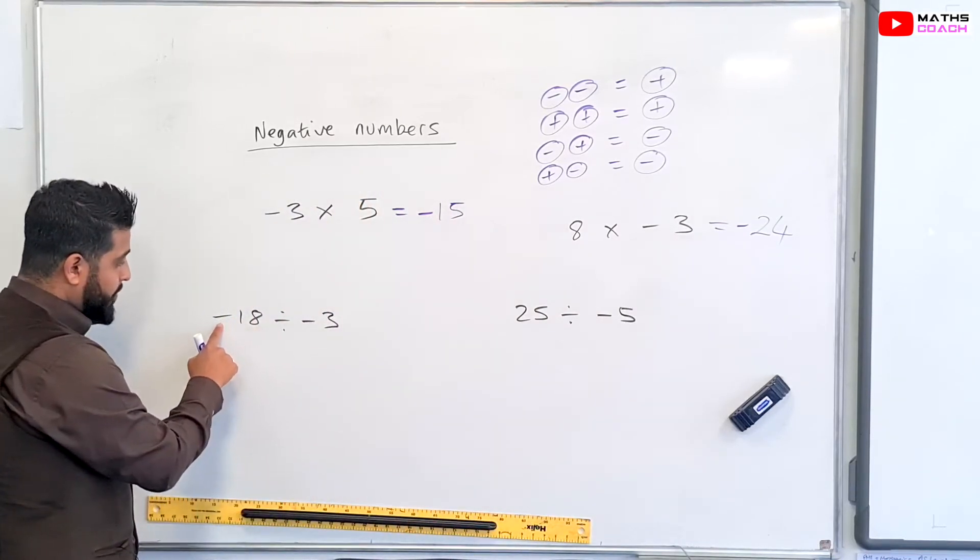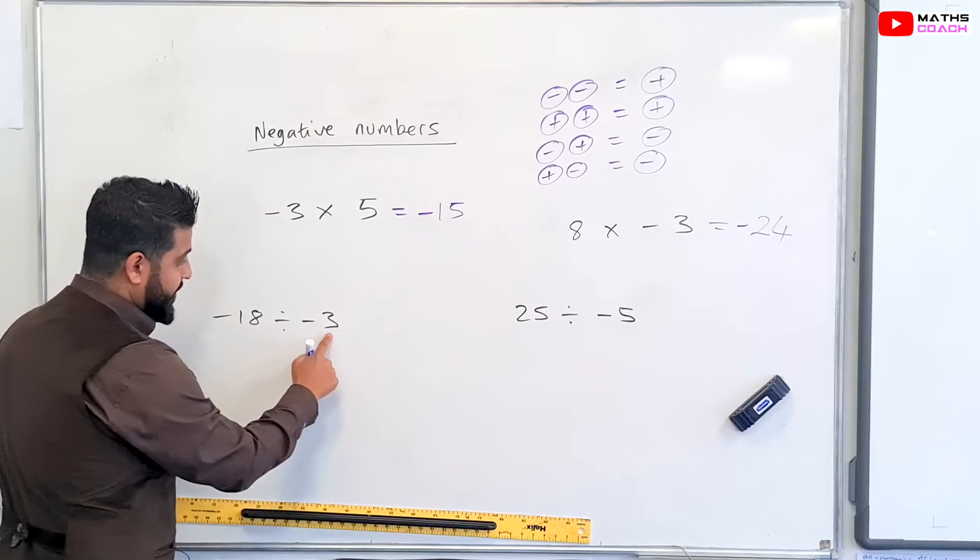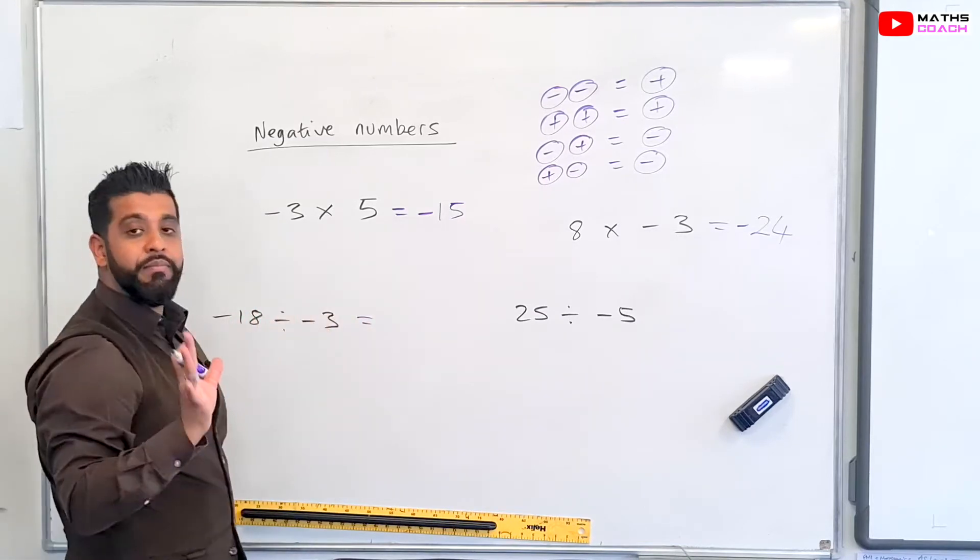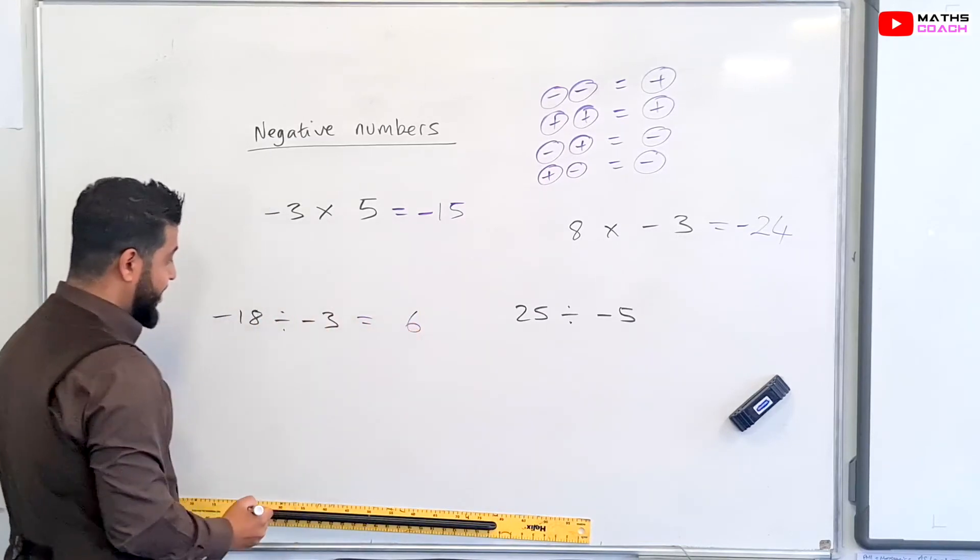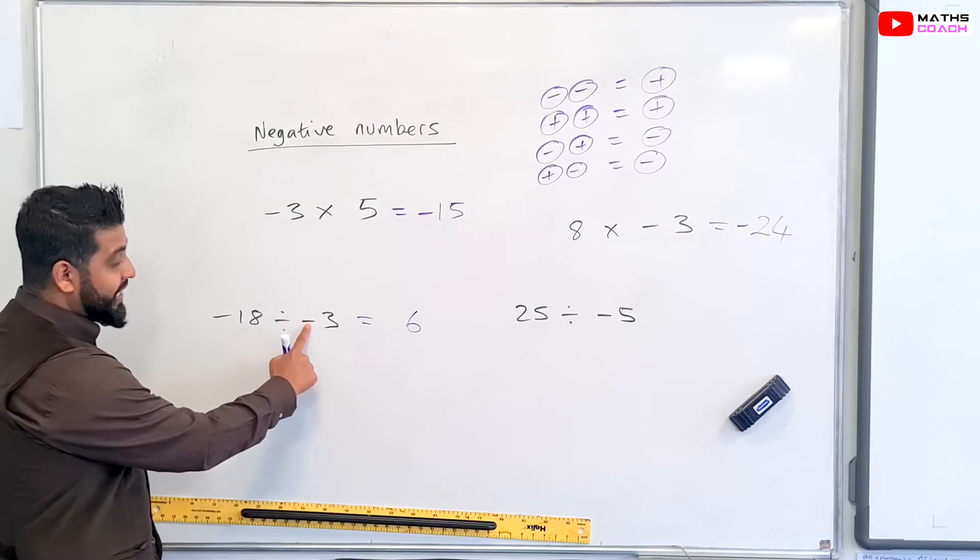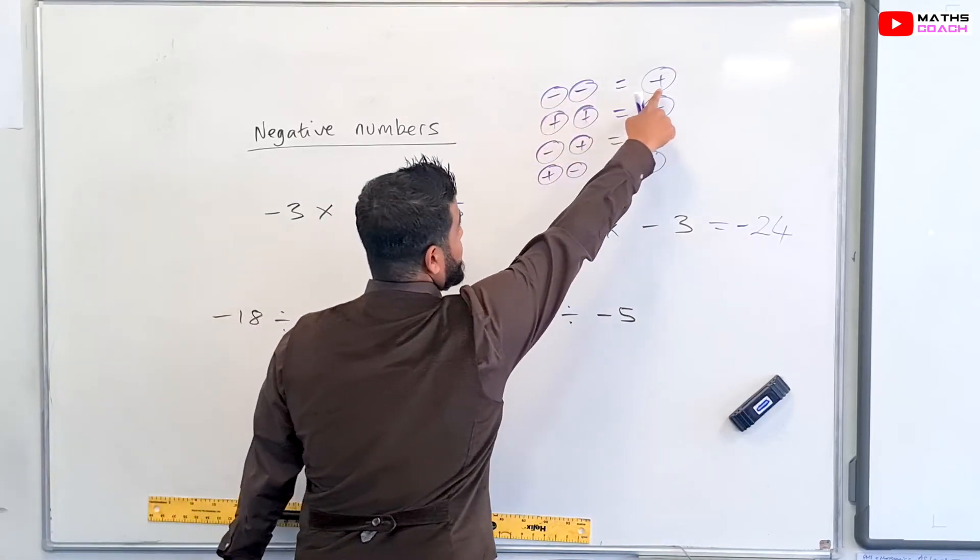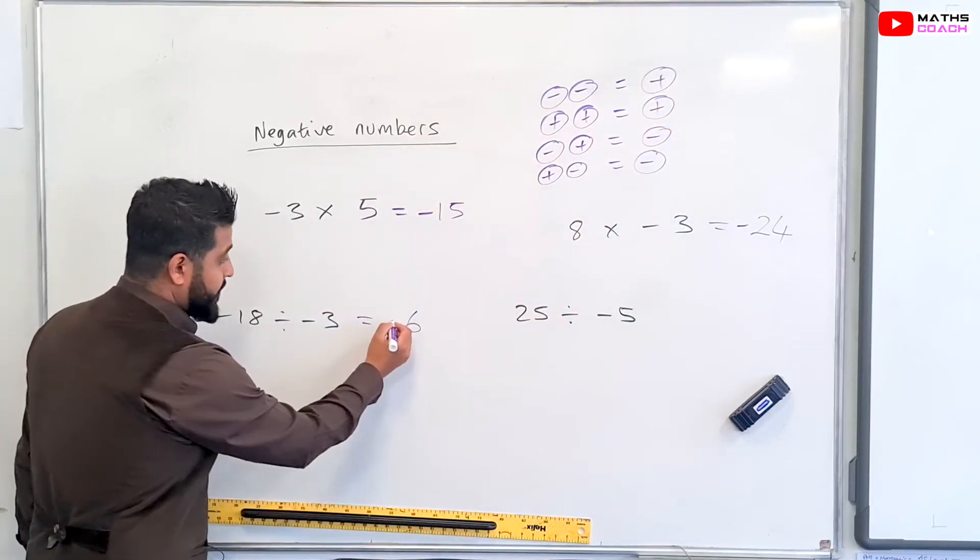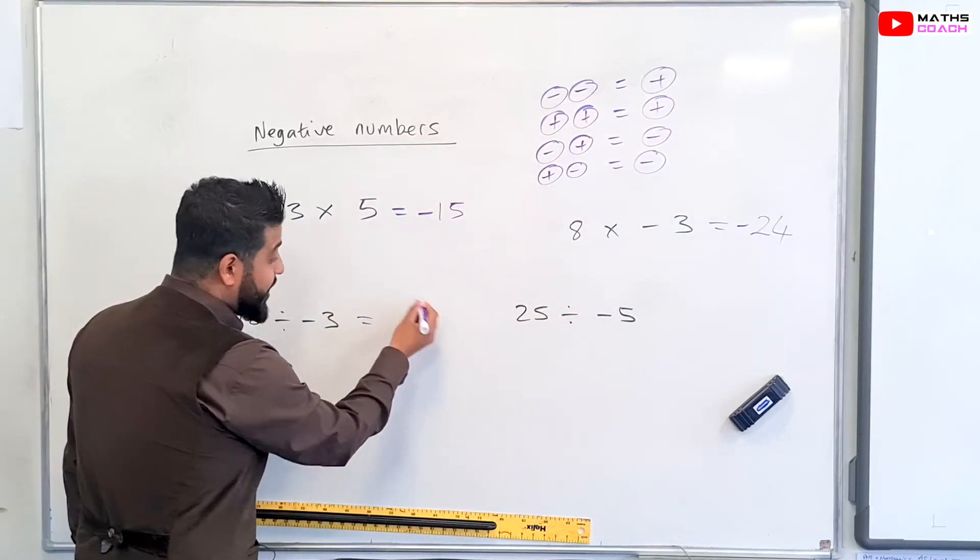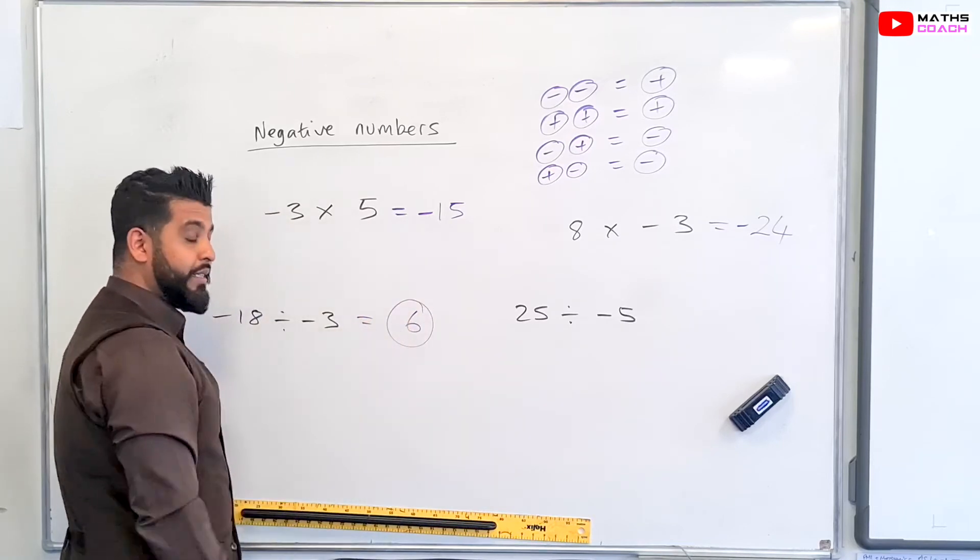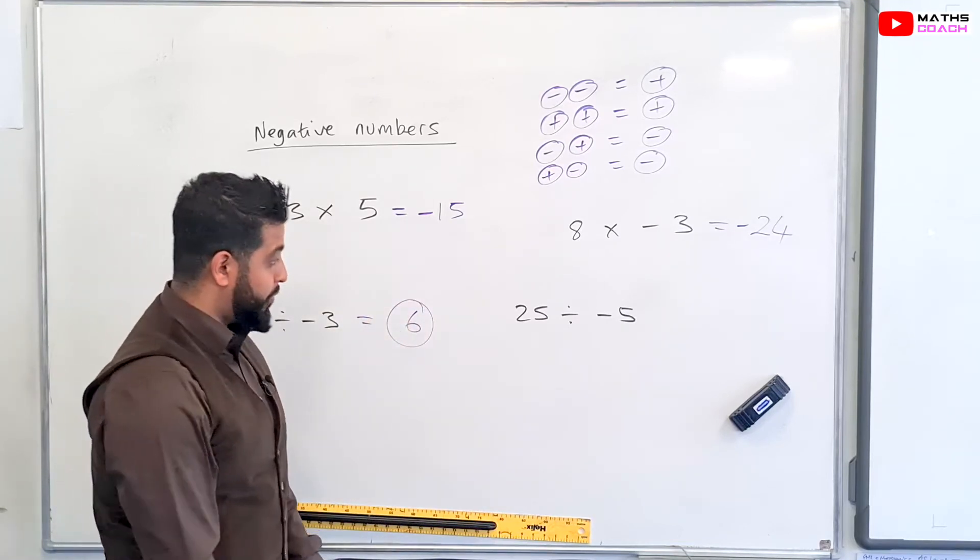Over onto this one. So minus 18 divided by minus three. So what's 18 divided by three? 18 divided by three is six. And we have a negative divided by a negative. So we have two negative numbers being divided. So the overall answer will be positive. So it's going to be a positive six. I don't need to write a plus sign. Just not writing a negative means that the answer is positive.